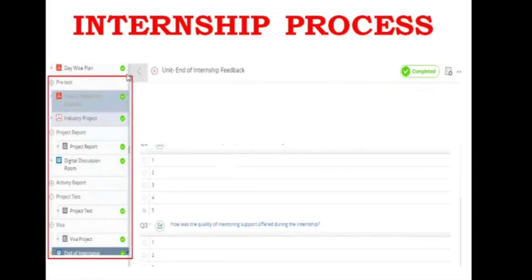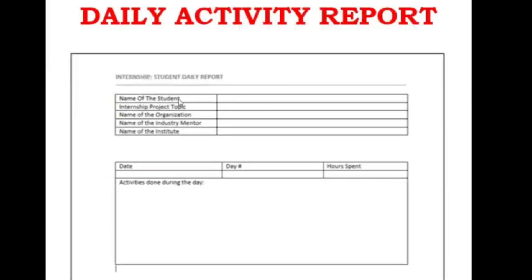Once you complete all the required tasks — Day Wise Plan, project reports, and activity reports — you will get tick marks on the internship process screen. Then you have to submit feedback to get your certificate. For the activity report, you fill in details like student name, internship project name, name of the organization, date, day number, hours spent, and activities done for that day. Each day you submit this report and notify the industry mentor in the Discussion Room to evaluate it.